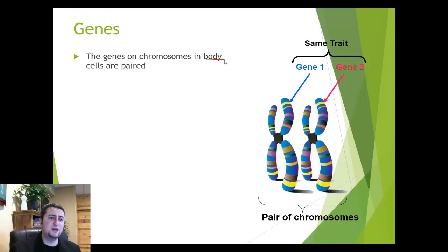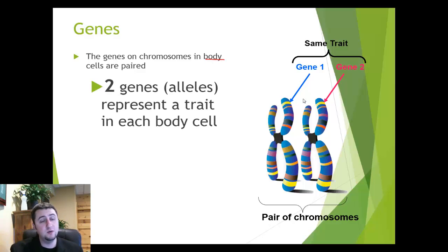Now in each body cell, we have two copies of every gene, one on each one of these chromosomes. Here's chromosome 1. Here's chromosome 2. And at this point, we actually call those alleles. So alleles is another name for having different types of genes in your body. And those genes ultimately will control one type of trait.